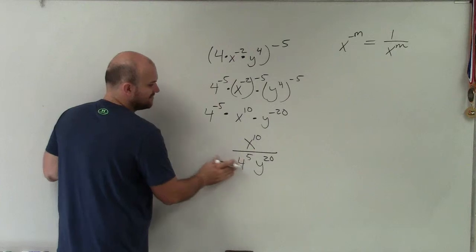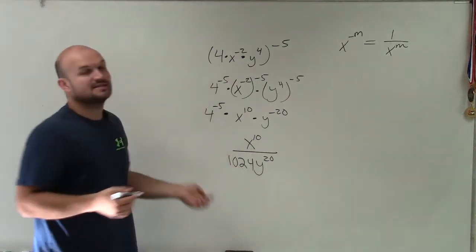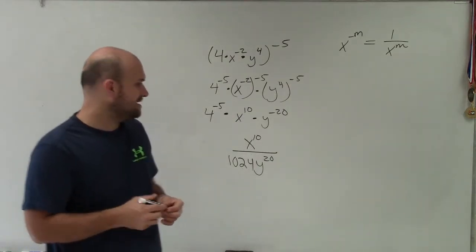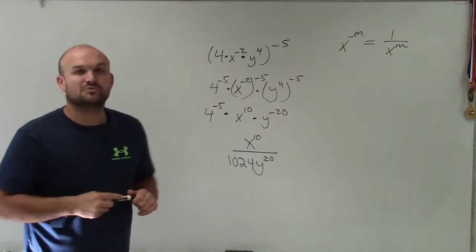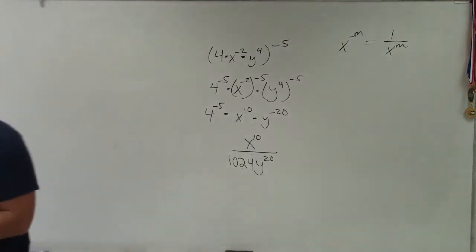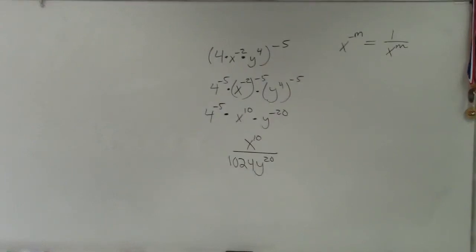Now, I can simplify 4 to the 5th as 1,024. As long as it's in the denominator, you're going to have it be positive. So there you go, ladies and gentlemen. That is how you simplify using your rules of exponents. Thanks. Thank you.